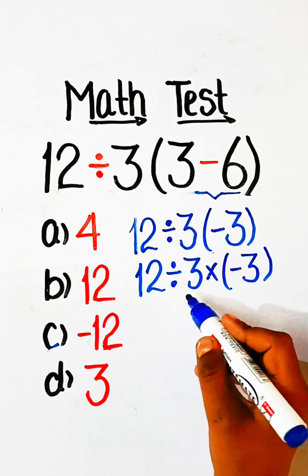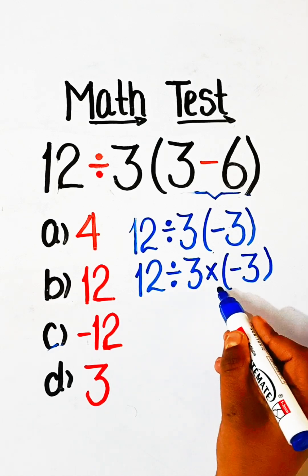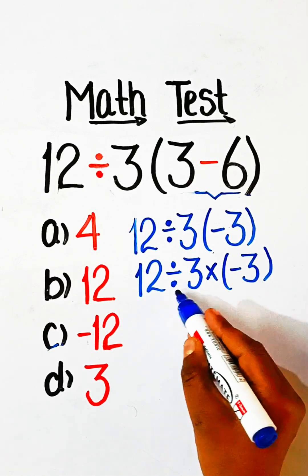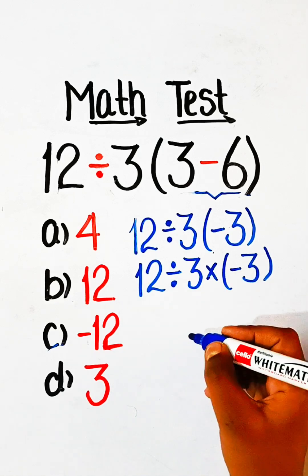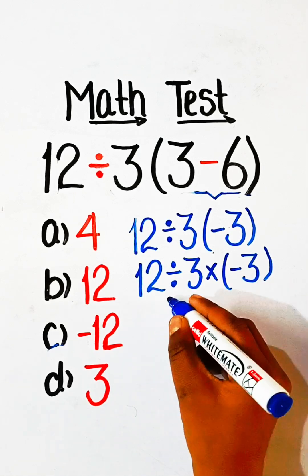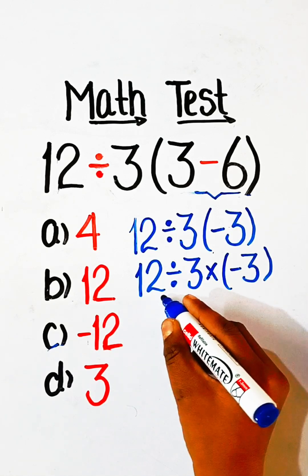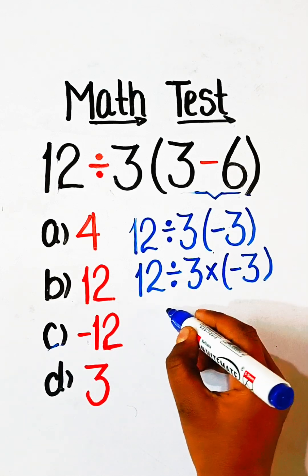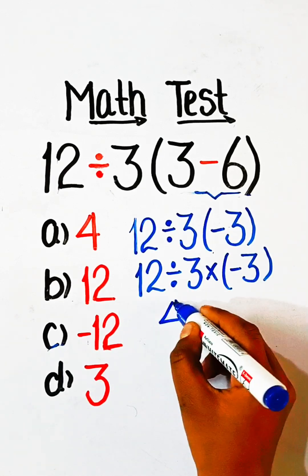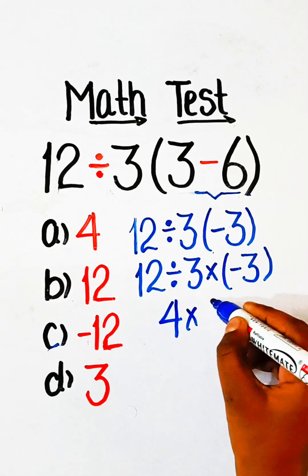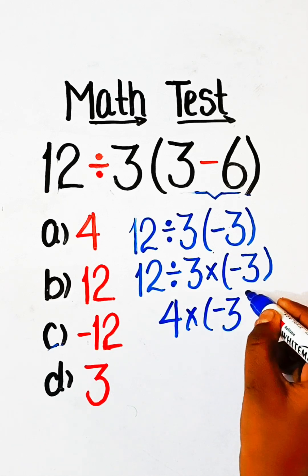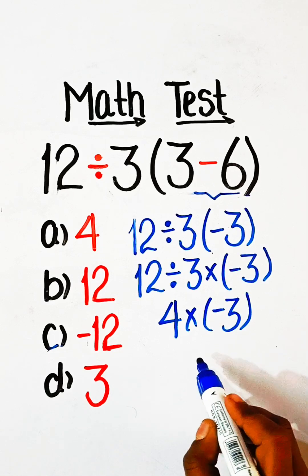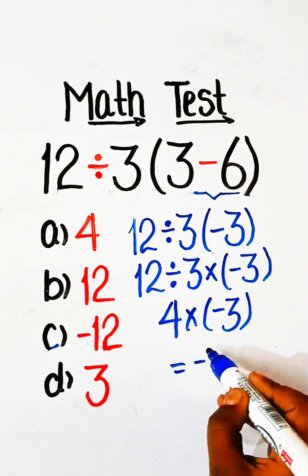12 divided by 3 — here we have a hidden multiplication part, so we write the multiplication: 12 divided by 3 multiply minus 3. Here we have division and multiplication, which are of the same precedence, so we do the operation from left to right. 12 divided by 3 is 4, multiply by minus 3.